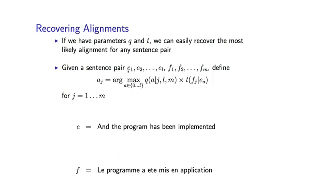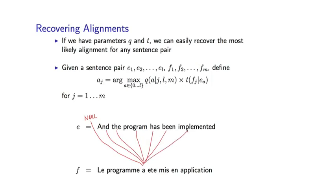The key definition is: given a sentence pair e1 through el, f1 through fm, for each A sub j (j equals 1 to m), you simply find the alignment that maximizes the product of two terms — Q of a given j, L, M and T of f sub j given e sub a. To illustrate: for the French word 'a', for the null word we evaluate Q of 0 given position 3 in French, with English length 6 and French length 7, times T of 'a' given null.